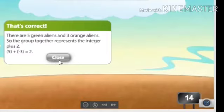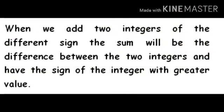Now we have to follow the second rule to solve the problem with integers having different signs. When we add two integers of different sign, the sum will be the difference between the two integers and will have the sign of the integer with the greater value.